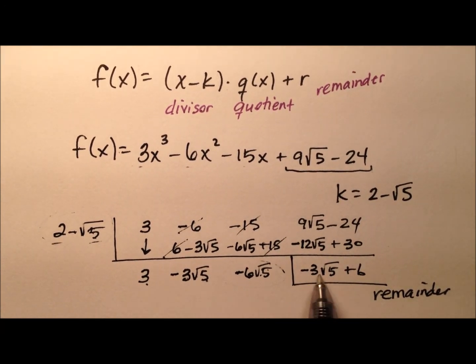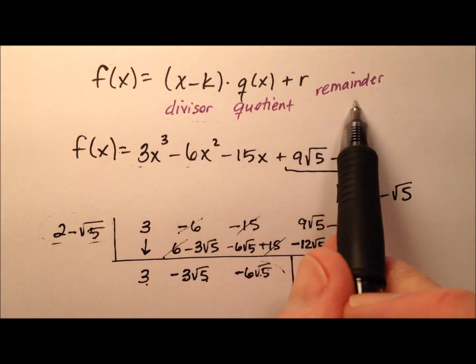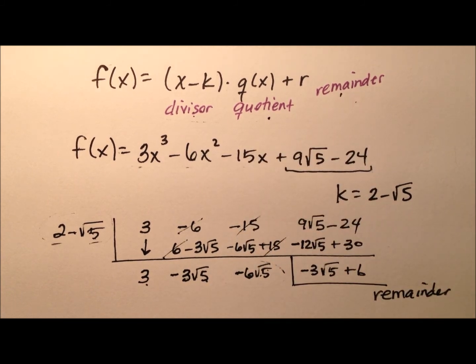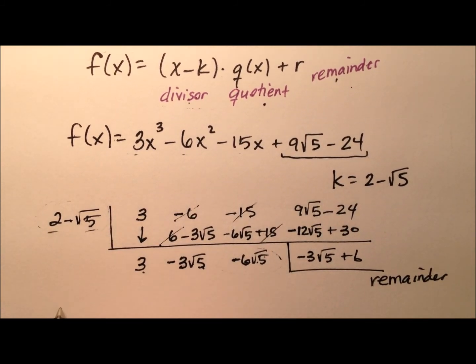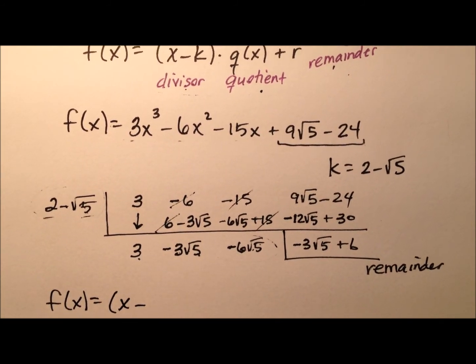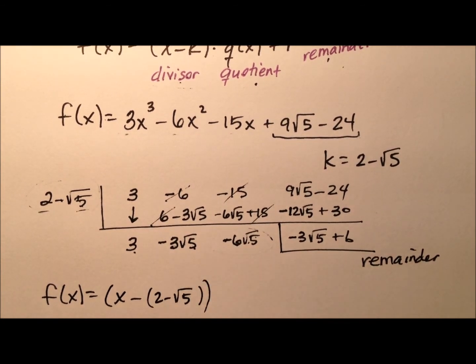Okay, well, we're not concerned with building this up in normal quotient form. Remember, we're concerned with rewriting it in this divisor times quotient plus remainder form. So let's go ahead and do that. So our f of x then is going to be x minus k, and our k value was 2 minus the square root of 5.